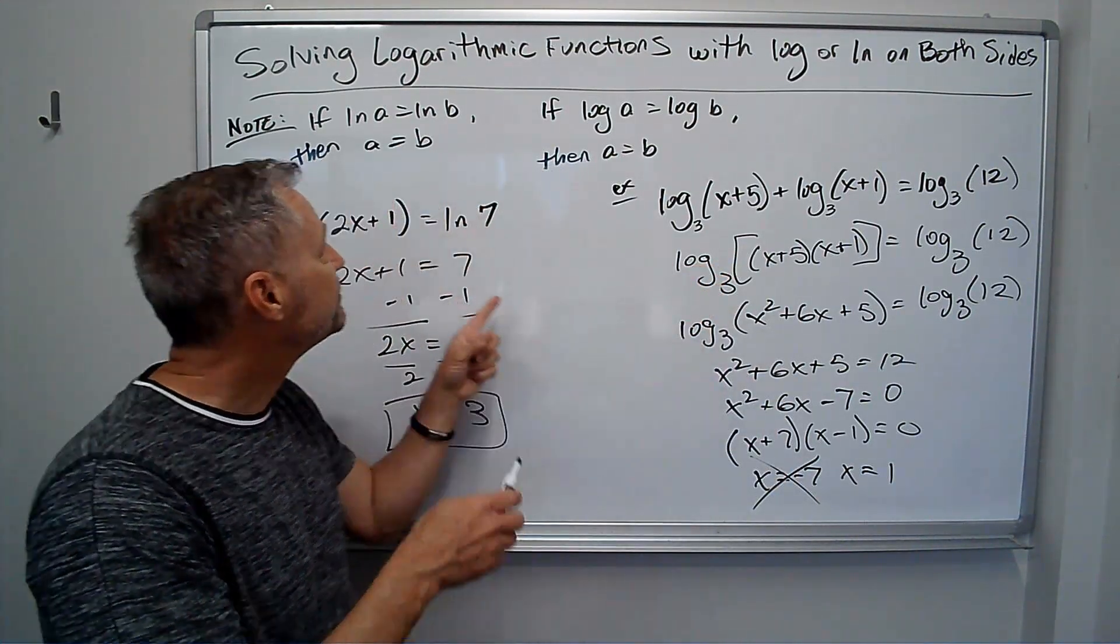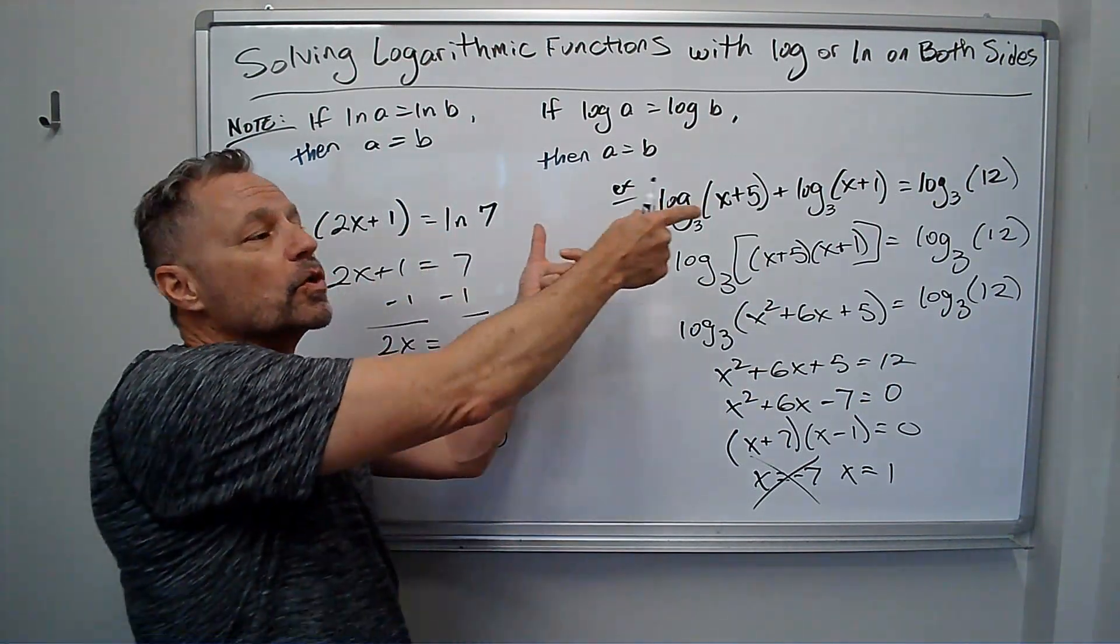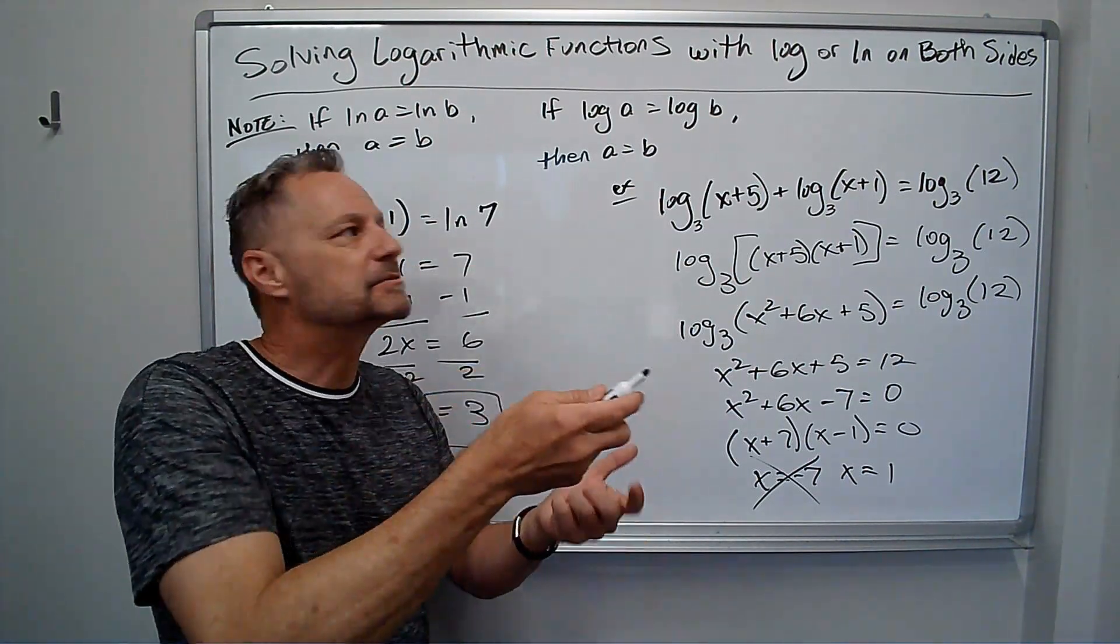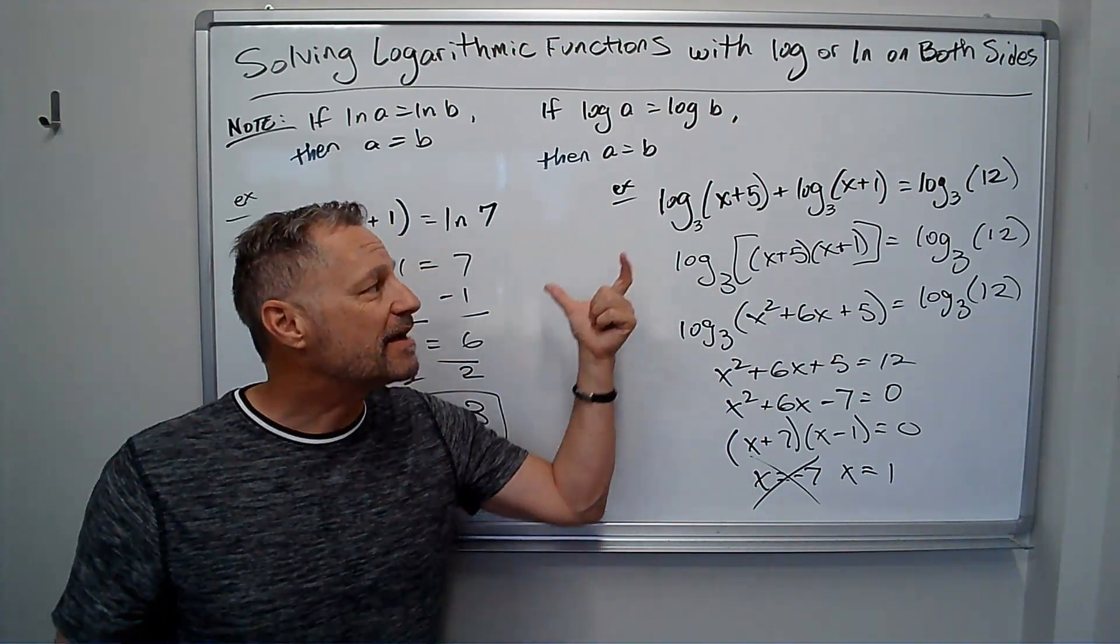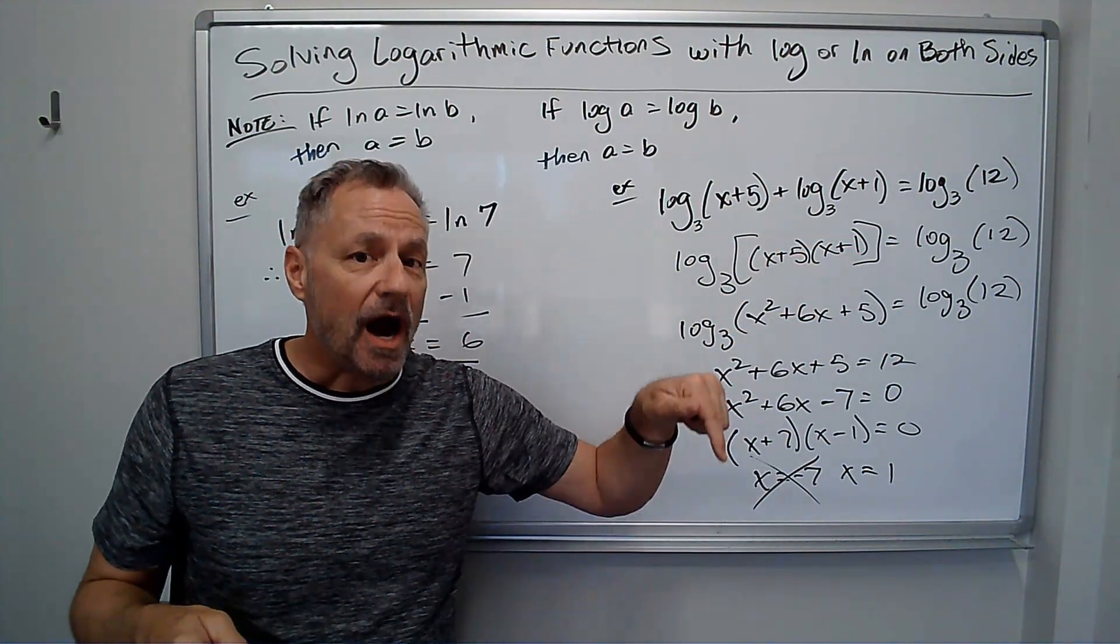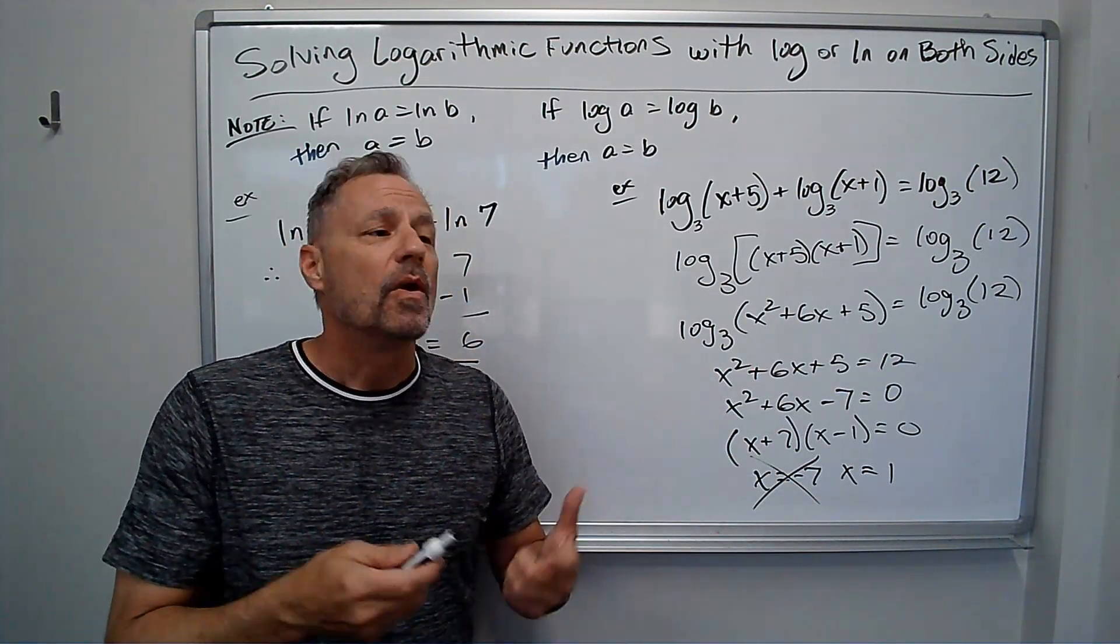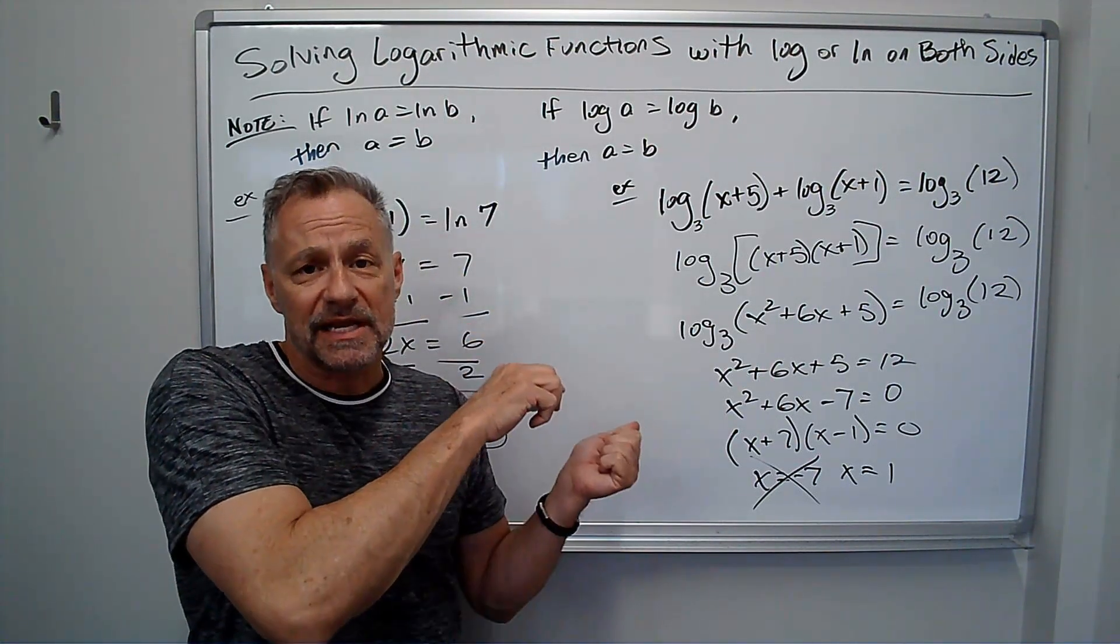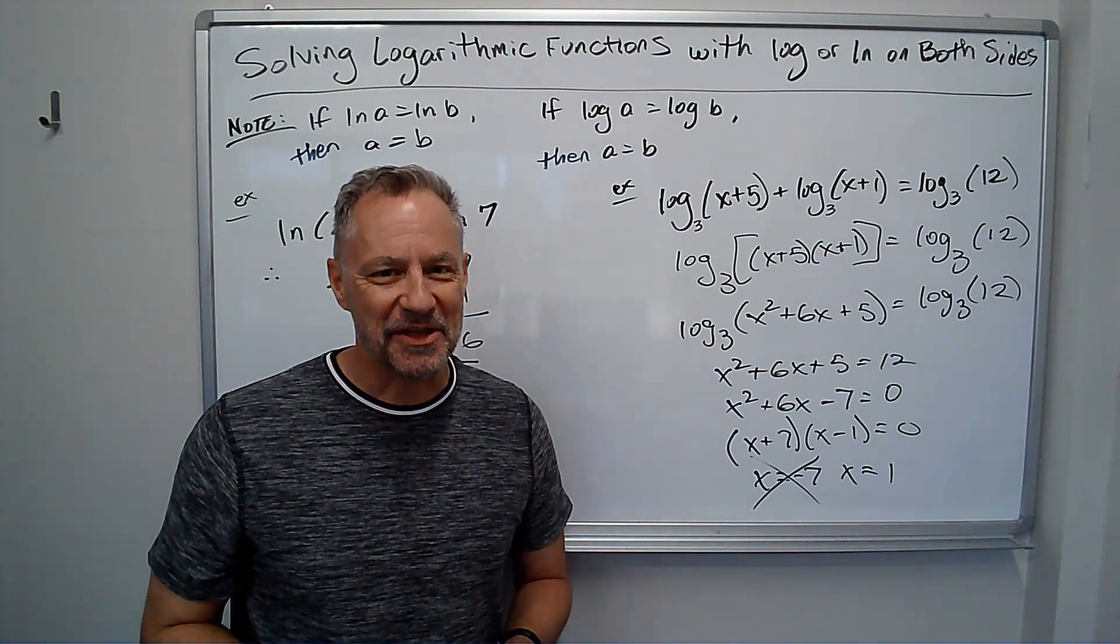But the idea is if you have ln equals ln, you can drop the ln's and just set the arguments equal to each other. It works the same as log for any base. Remember, ln is just log base e, so that's just a special example of this. But that's the property. Again, if you have part of it that doesn't have a log or ln attached to it, you have to do it different. I will attach that video to the end of this video. You may see it already, or you'll see it very momentarily. Either way, easy if you have log equals log or ln equals ln. Not as easy if you don't, but I'll show you that in the other video.